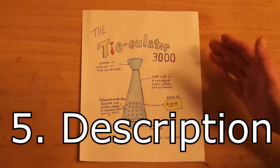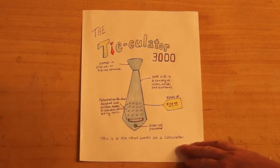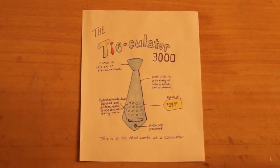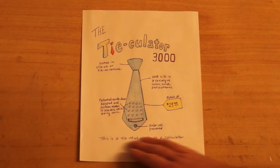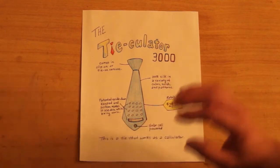And then the fifth thing is a description. So down at the bottom, I just wrote a simple description of what it is, what it does. So this is a tie that works as a calculator. So that explains the whole concept right there in just a brief sentence. You could have one or two sentences to describe what it is, what it does.